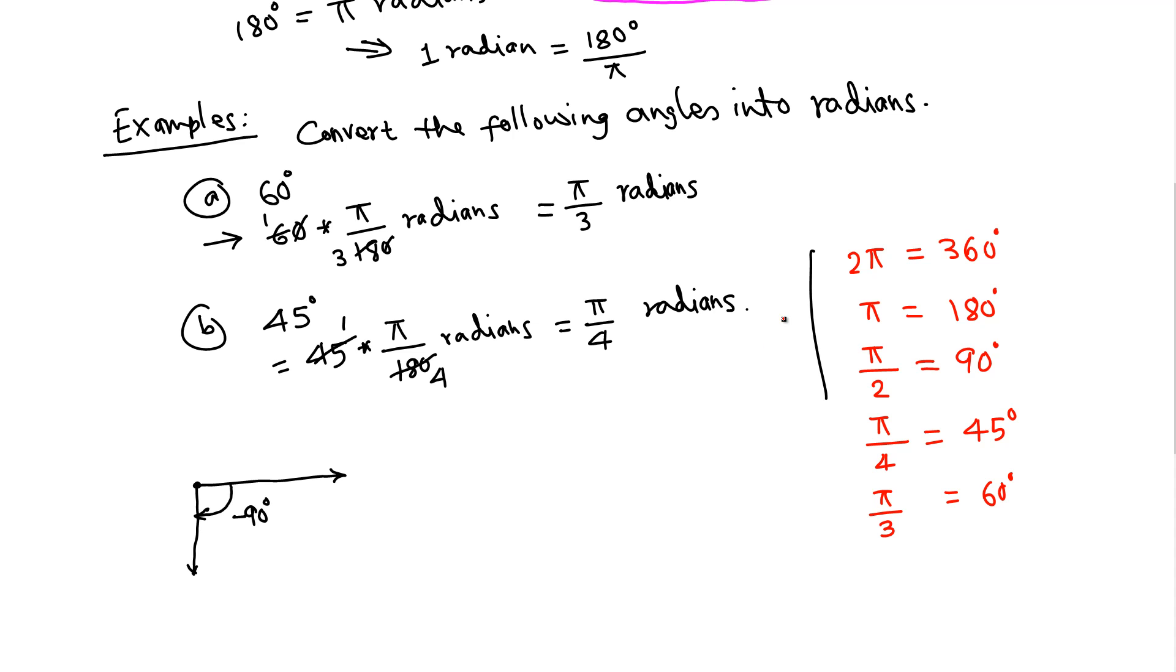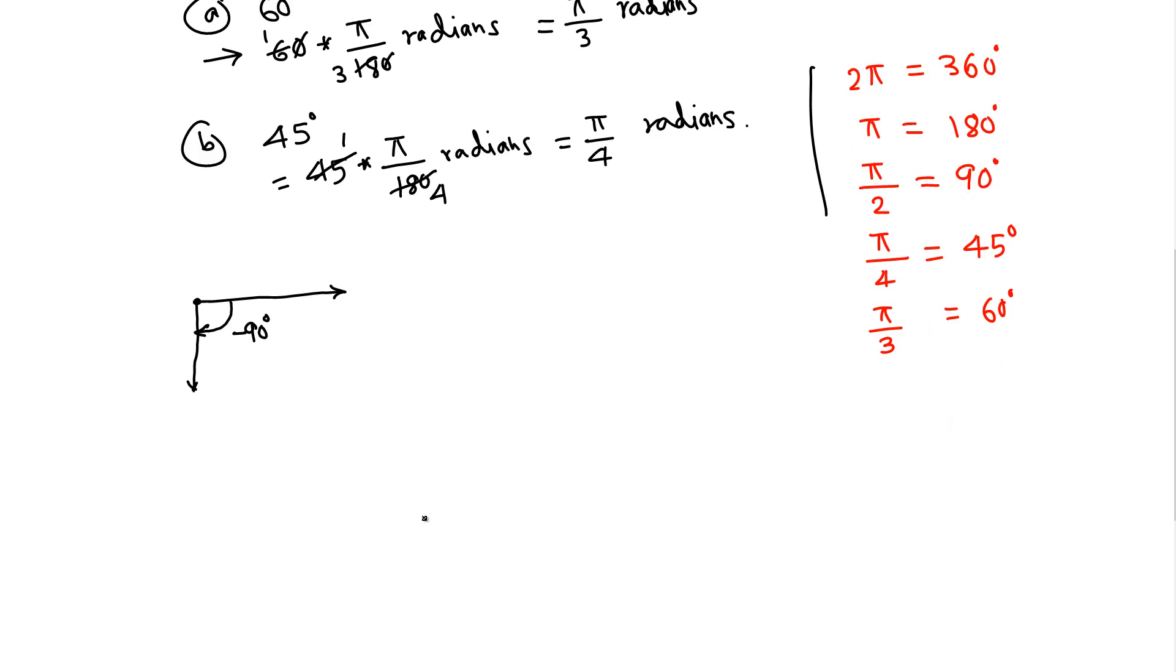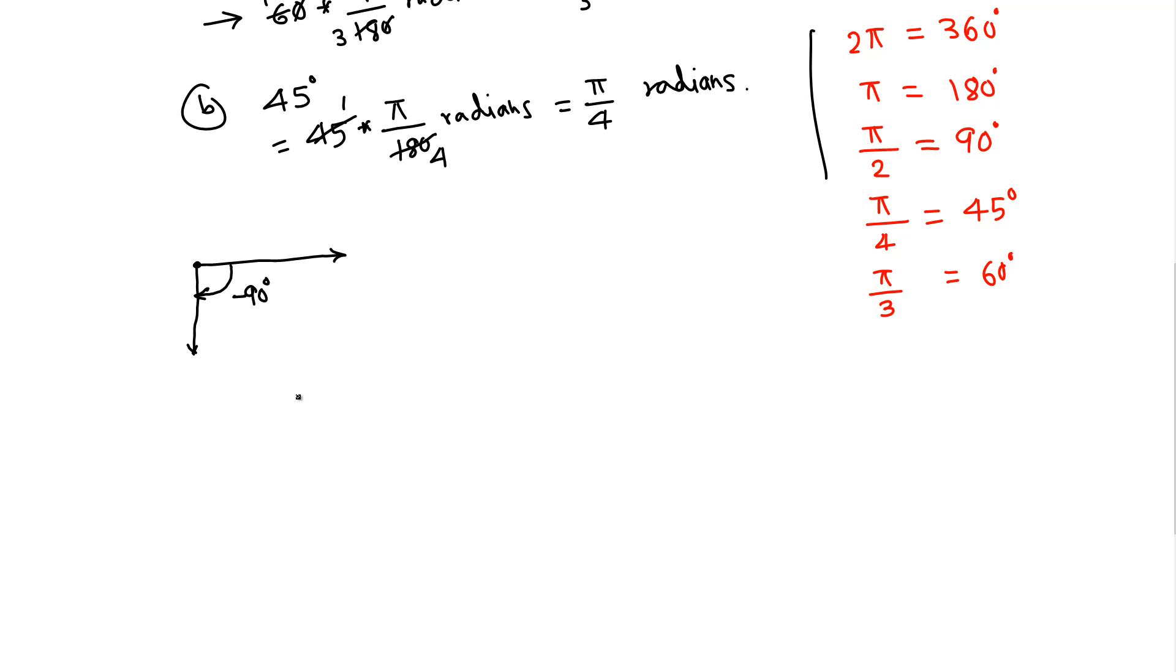Now let's do two more examples where we convert radians into degrees. Suppose the angle is 5π over 12. Generally the radians are not mentioned. If it is 5π over 12, we need to assume this is given in radians because of the presence of π.